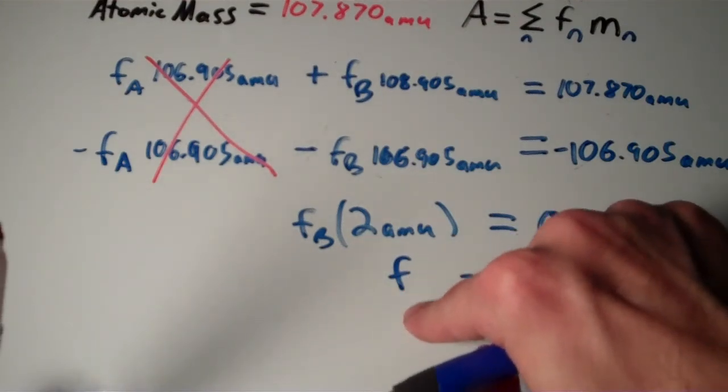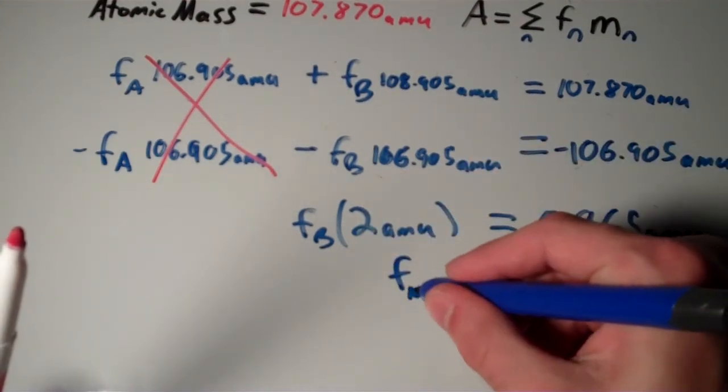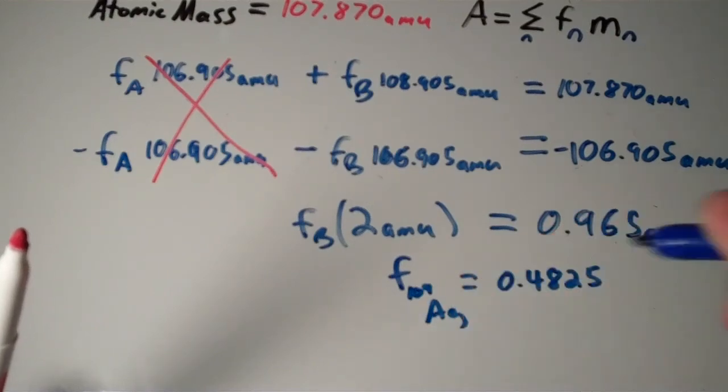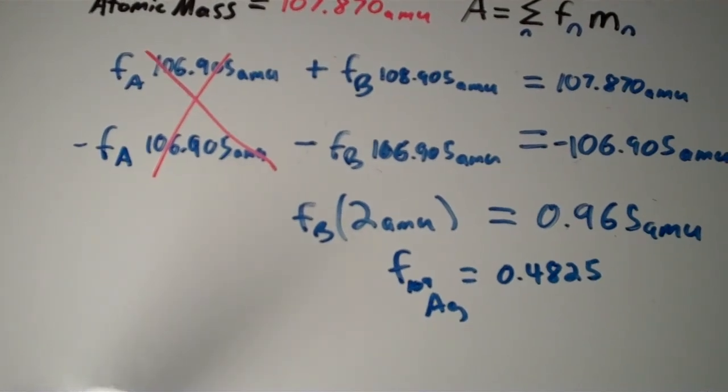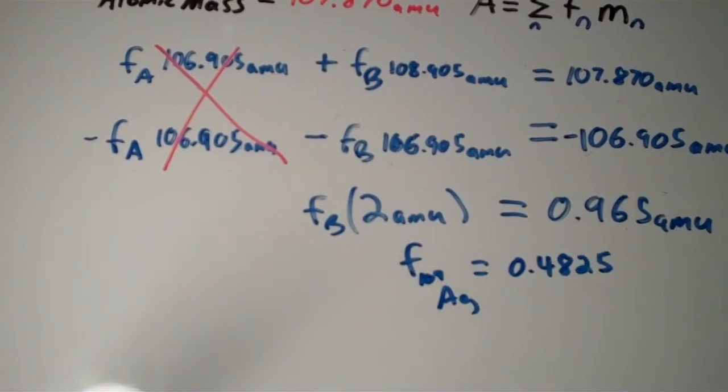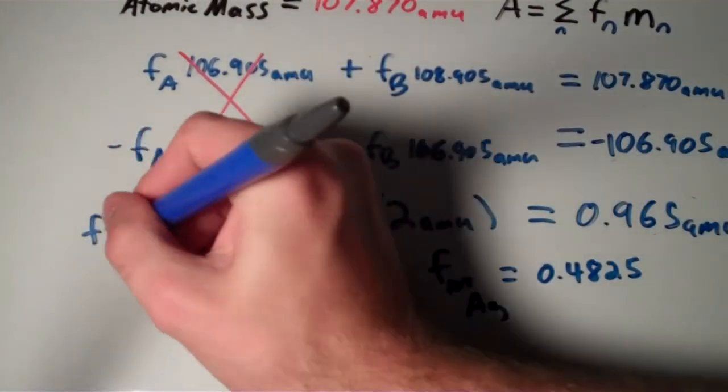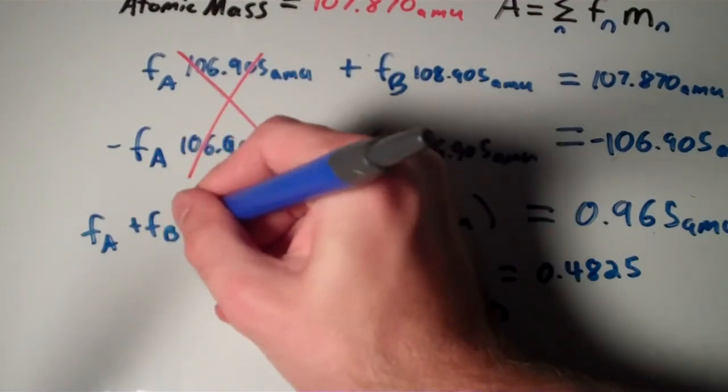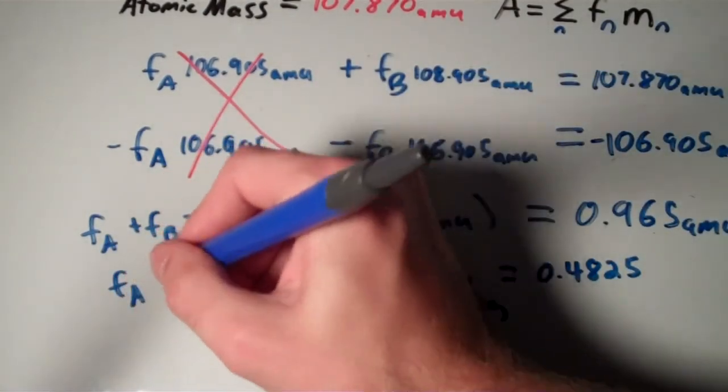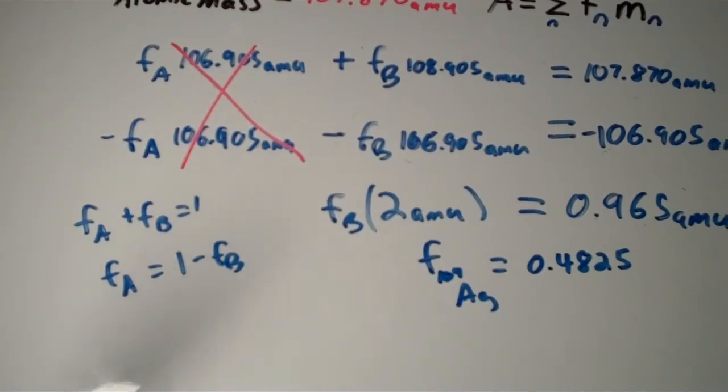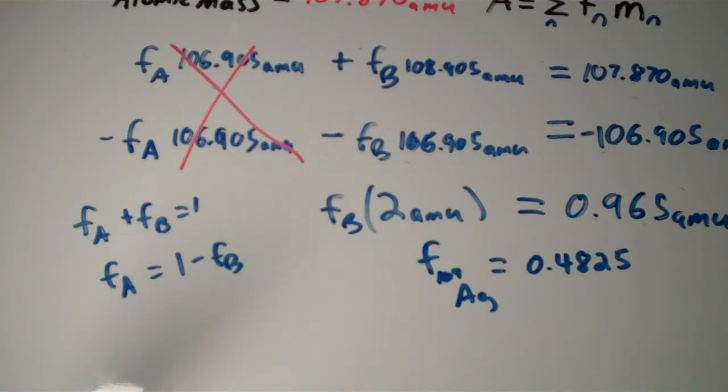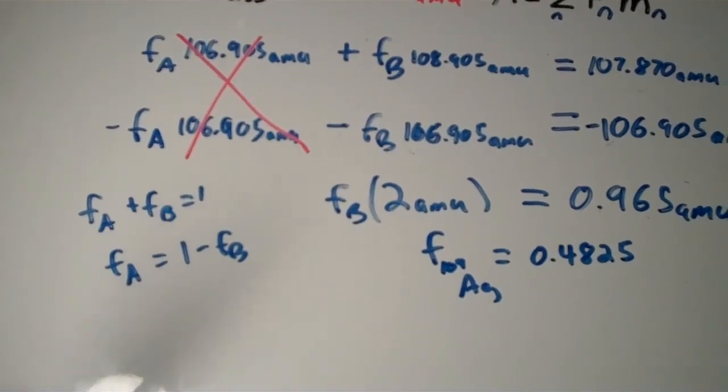So in other words, we just calculated the fraction of silver 109. How do we get the fraction of silver 107? Easy. In our initial equation, we said that FA plus FB equals 1. So to get FA, simply take 1 minus FB. And I'm not going to do that in this video. I think you can probably take that from here.